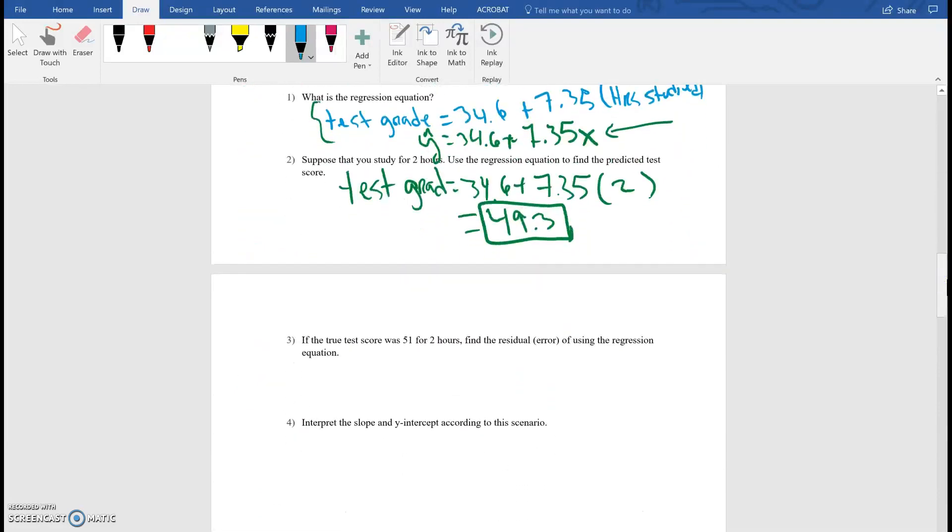So I'm going to go back here and my residual E is going to be Y minus Y hat. So Y is my true value. Y hat is my predicted value. And since we're only looking at two hours, this 51 is going to be my true value because it's the true test score. Studying for two hours gives you a 51. So this is going to be 51 minus my predicted value Y hat, which is what we found over here, minus 49.3. So I'm going to use my calculator. 51 minus 49.3 is going to give me 1.7. So I am off by 1.7. I kind of underestimated what the true value was. That's what this positive value means.